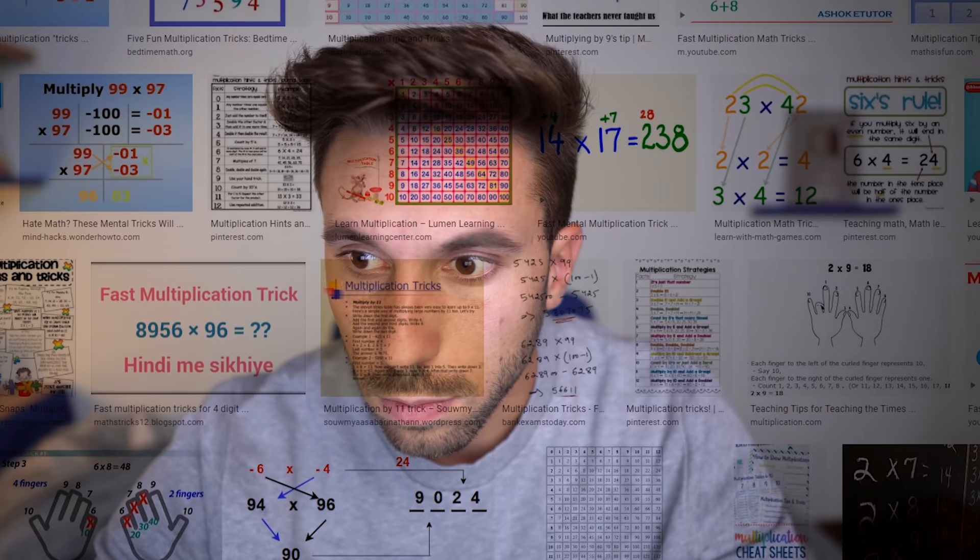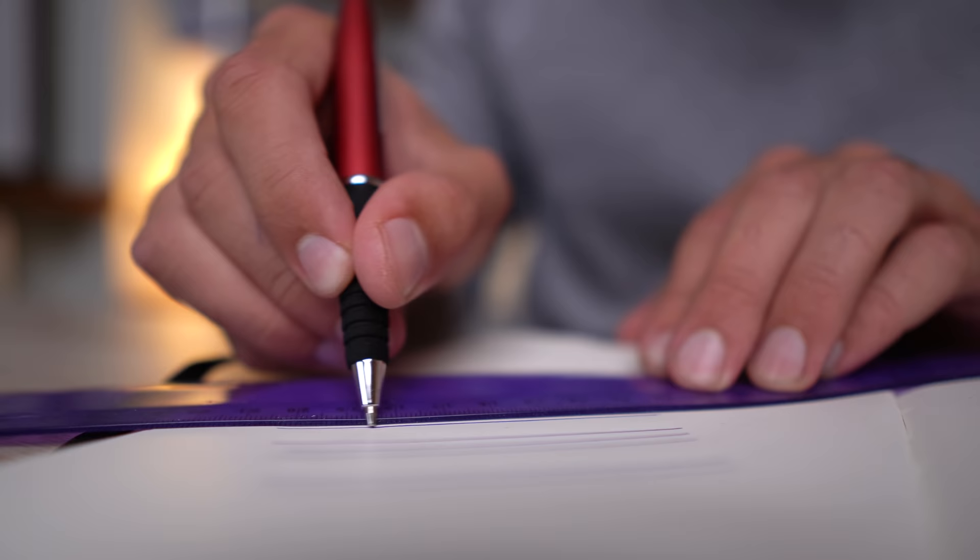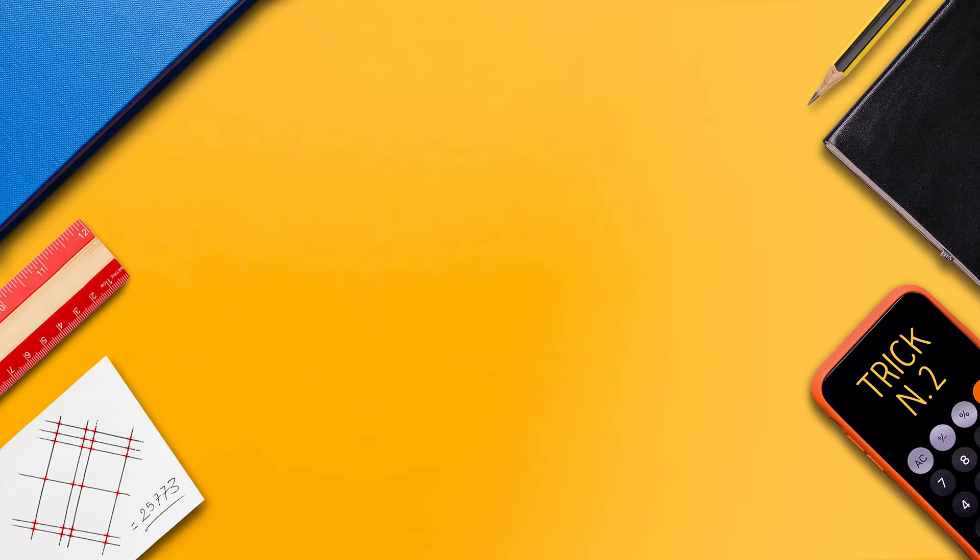At this point I was pretty curious to see if there was a trick to multiply bigger numbers like 3 digit numbers and I found a beautiful method which consists in representing the numbers through lines. So I took a ruler, even if you actually don't need it, and I tried with 213 multiplied by 23.